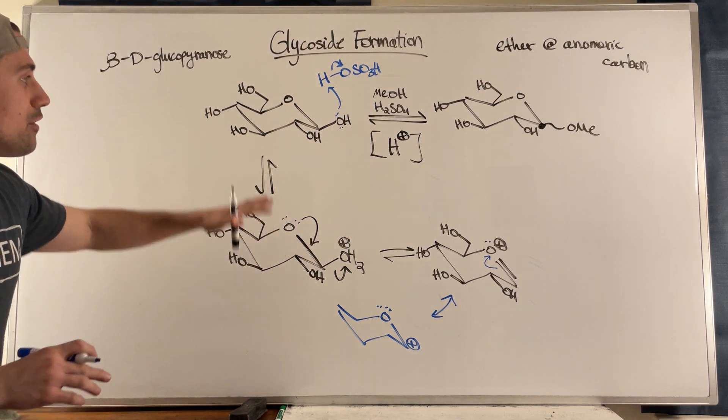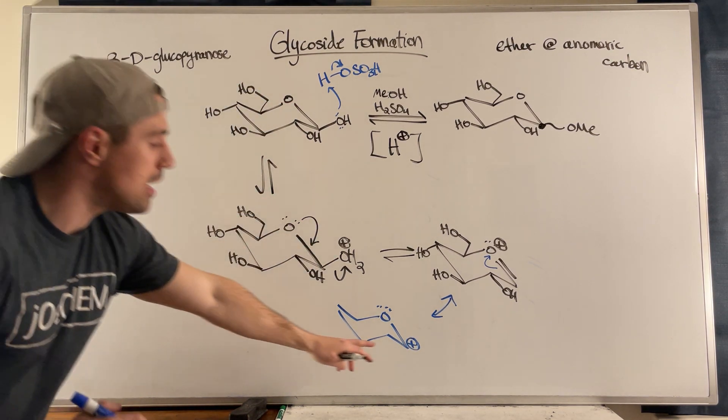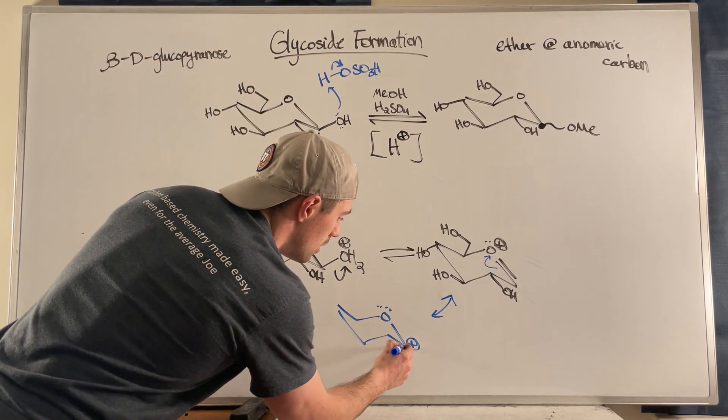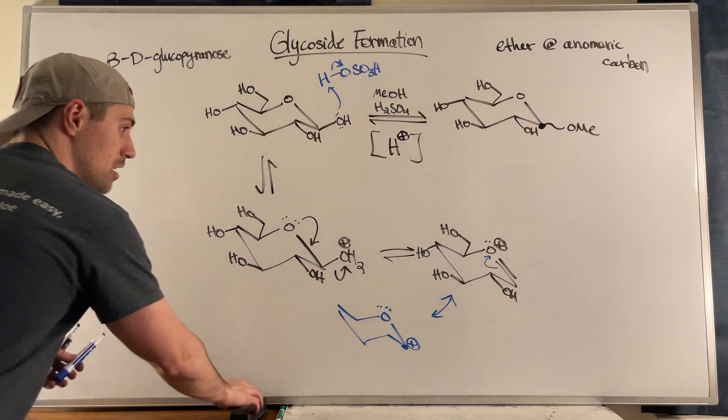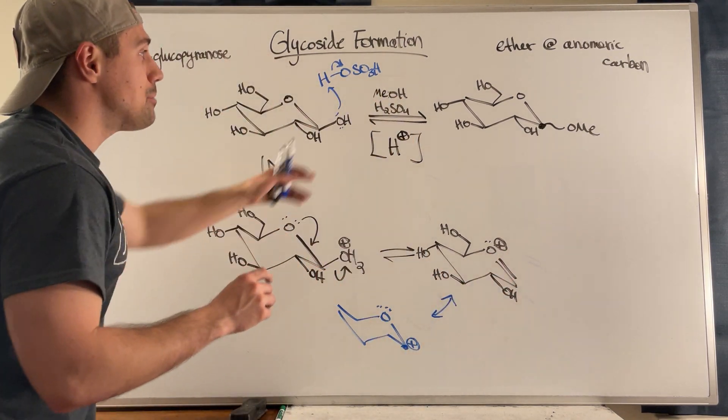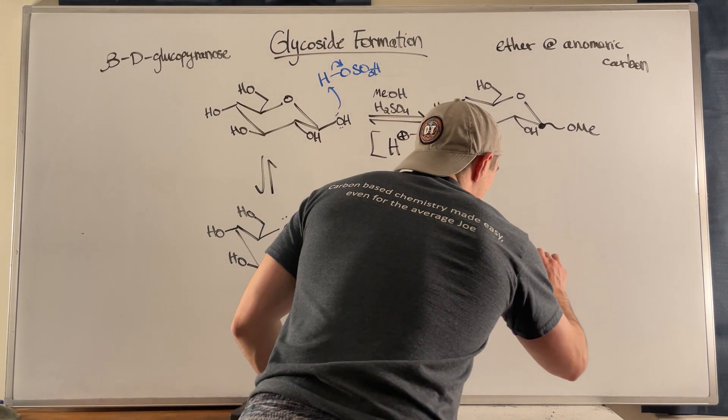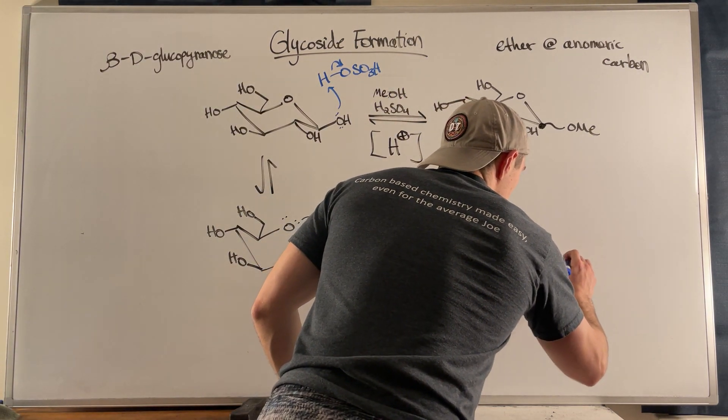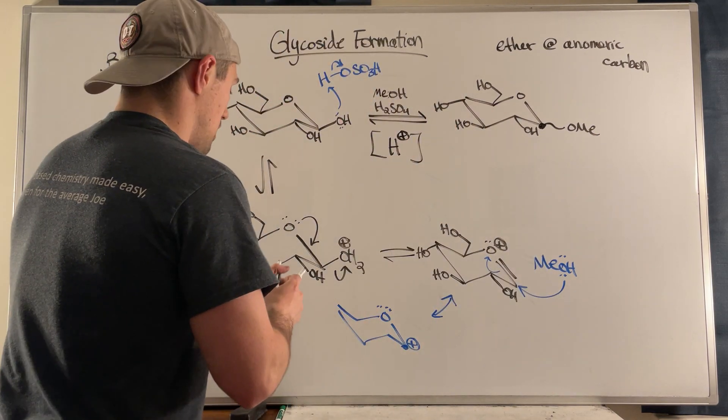So the whole point of, you know, the protonation and the kicking off of water is that it makes the anomeric carbon susceptible to nucleophilic attack. It makes it electrophilic. I'm going to erase this arrow because we're going to be doing some stuff. And then what happens is whatever extra alcohol or everything you threw in, that attacks the anomeric position. So we attack there, and then electrons kick back onto the oxygen right there.